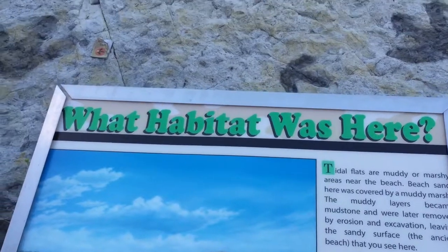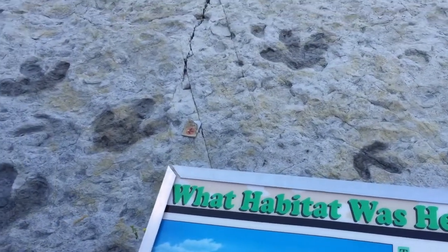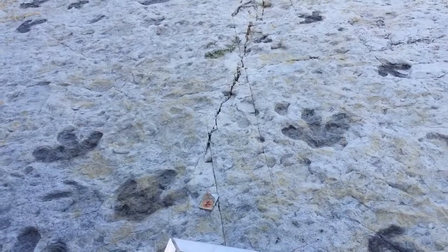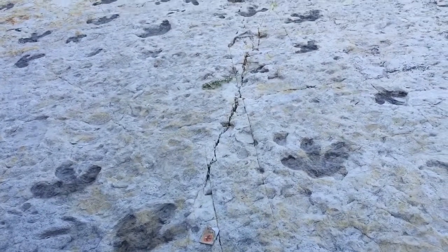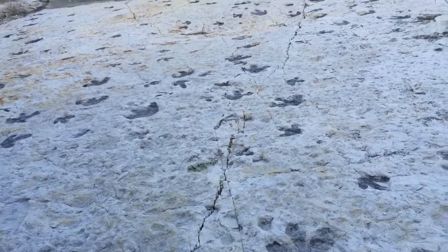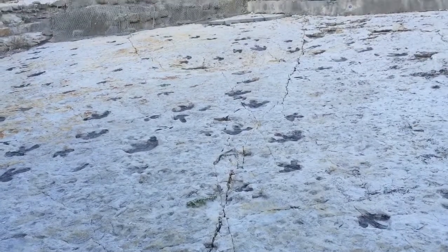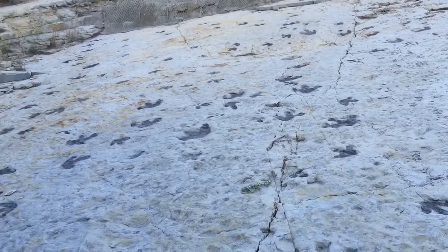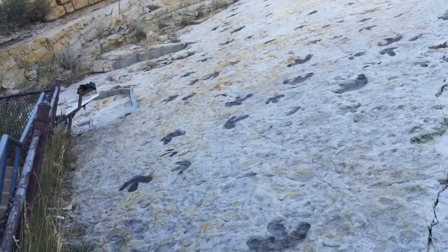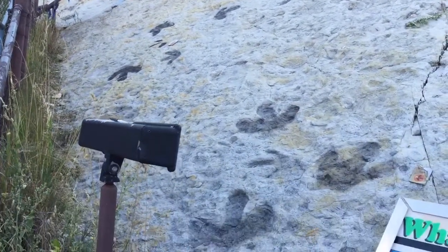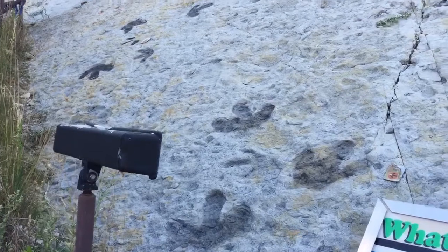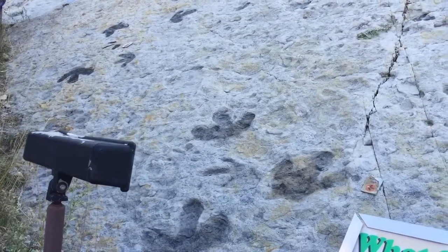Let's take a look at the trace fossils. These are a great example of trace fossils. Trace fossils happen when there's differential compaction. You might see a leaf that's fallen down, or a piece of wood,